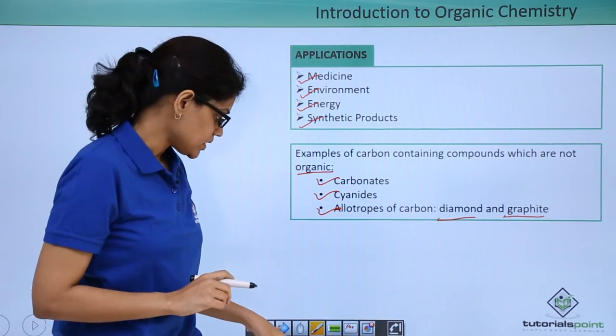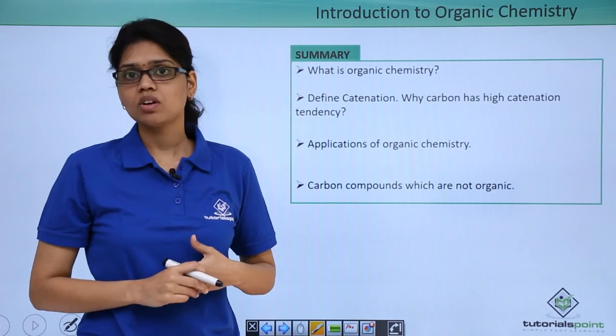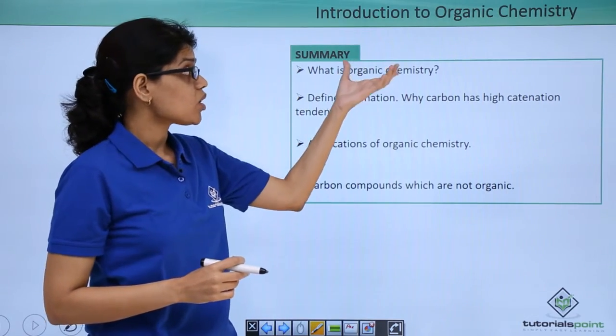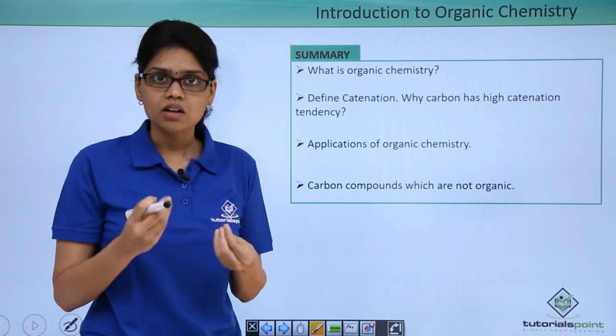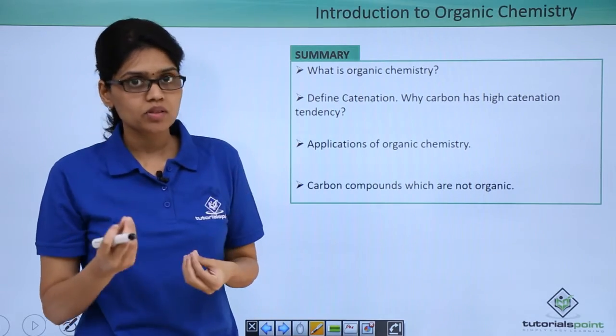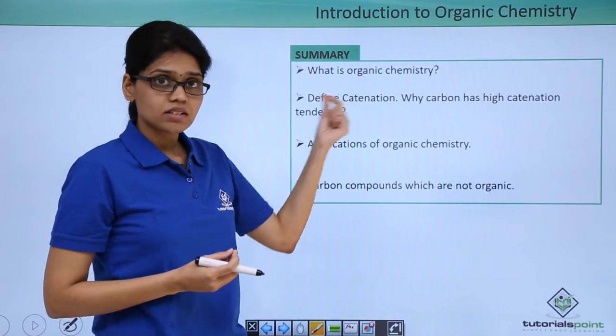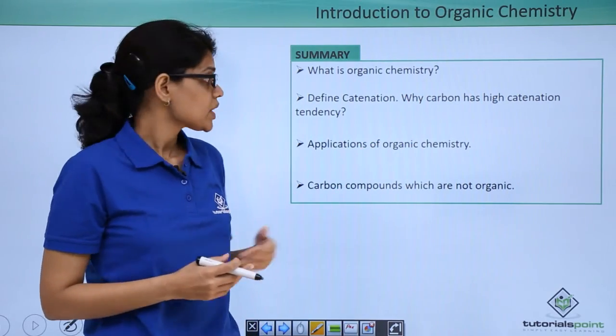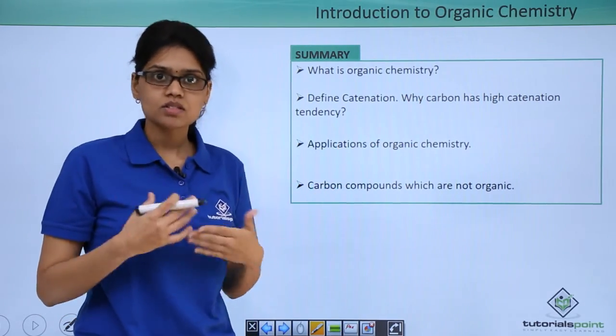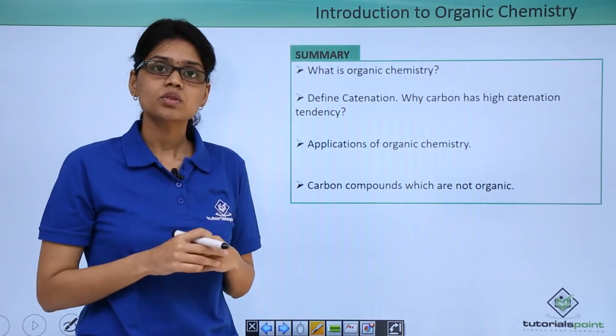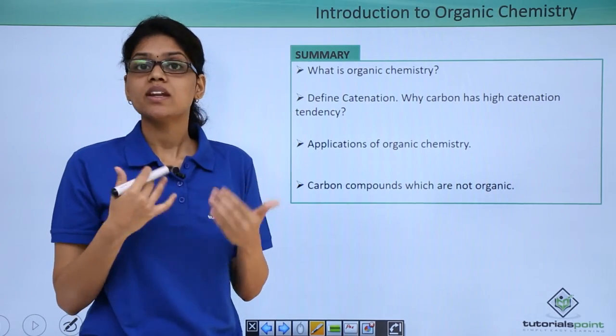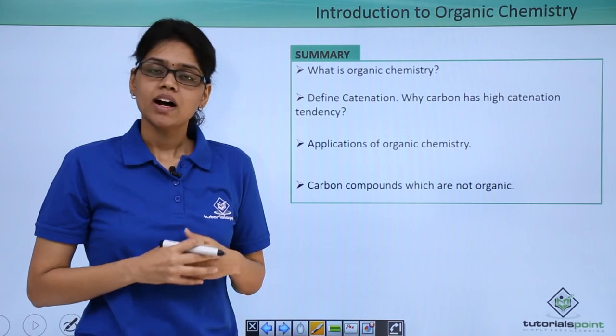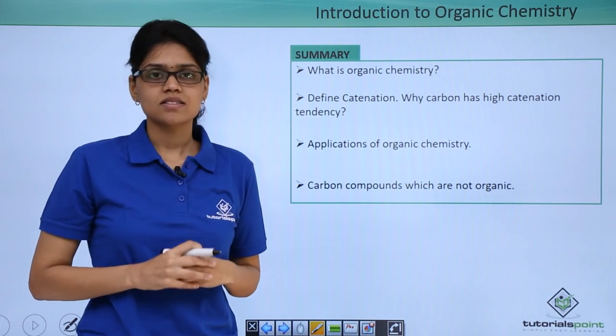To summarize, we have seen what organic chemistry is all about and why organic chemistry is the study of carbon, what is the unique property of carbon, which is catenation, and why carbon has such high catenation tendency, what are the various applications of organic chemistry, and also those carbon compounds which cannot be classified as organic. I hope you are clear with all the concepts discussed here.